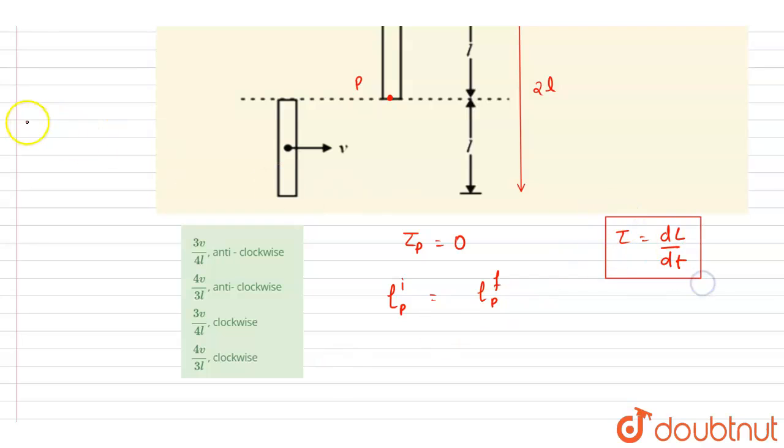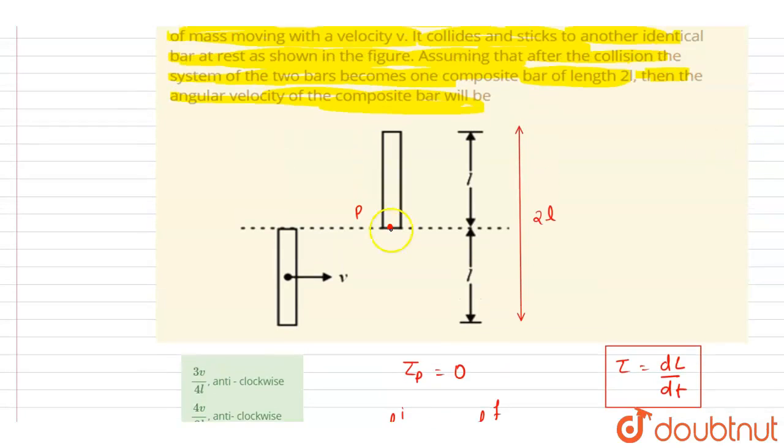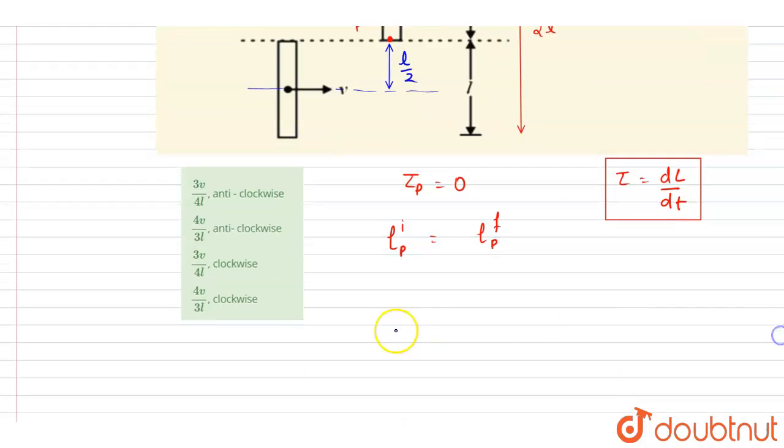We know that torque is the rate of change of angular momentum, which is zero here, so angular momentum will remain conserved. Earlier, if I talk about the initial angular momentum, you can see the line of motion. The perpendicular distance of the line of motion was l by 2, so I will write down the initial momentum equals...